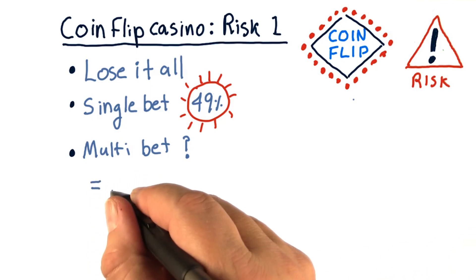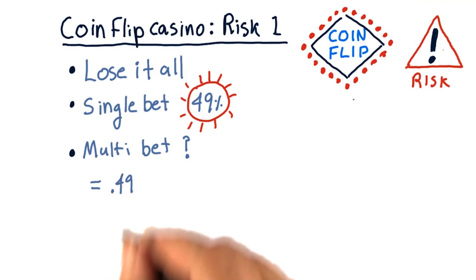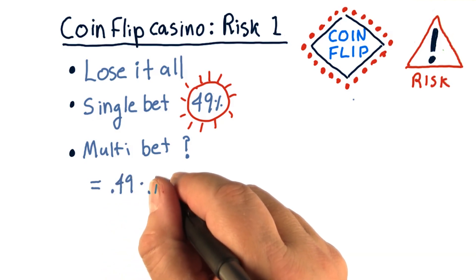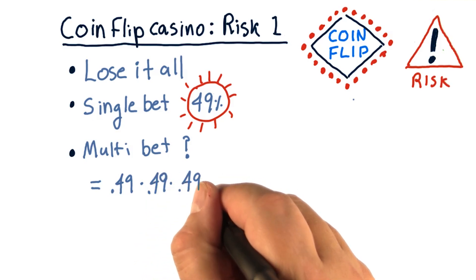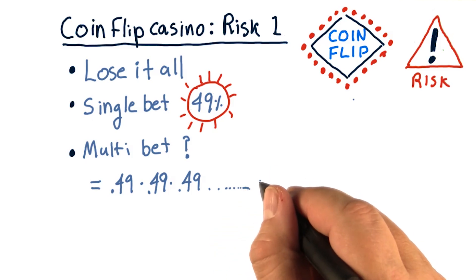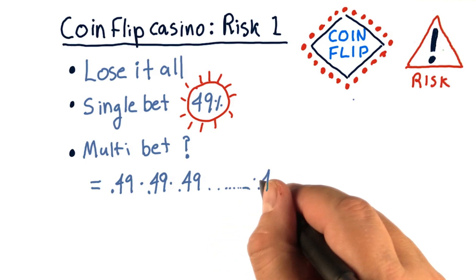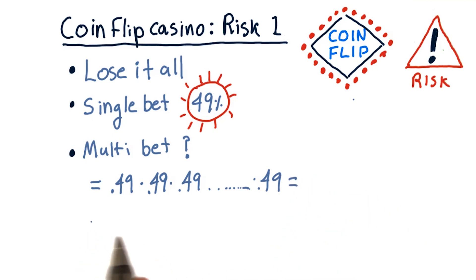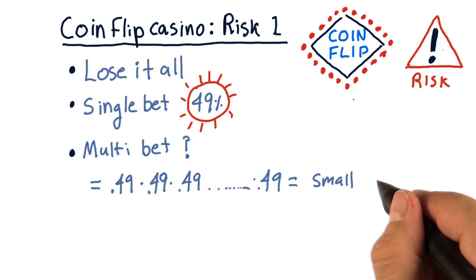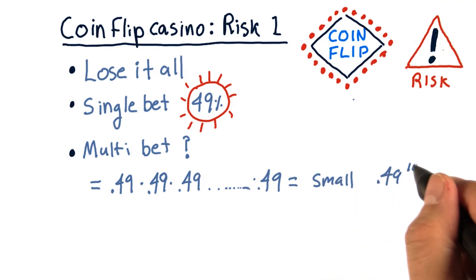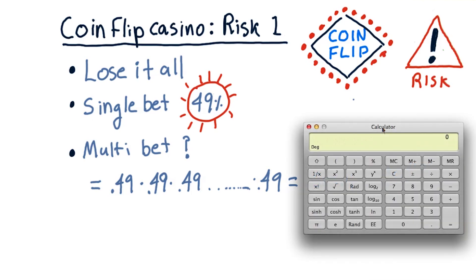The answer is that it's the probability that we lose on the first table, times the probability that we lose on the second table, times the probability we lose on the third — and we do this for all of the 1,000 tables and multiply those probabilities all together. That's the probability we would lose everything in the multi-bet scenario. That is a very, very small number: it's 0.49 to the 1,000th power. Let's try and calculate it on a calculator — 0.49 raised to the 1,000th power. It's so small, it's not even a number. That's how small it is.